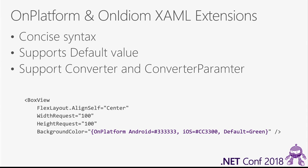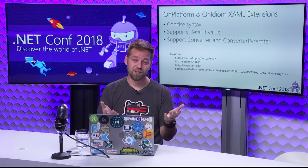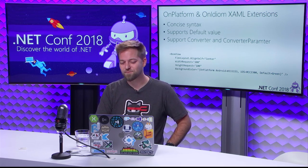This is absolutely one of my favorites, and it's gotten more reactions on GitHub than most. On platform and on idiom — Daniel Casalino, we call him Kazoo, submitted this PR where you get a much more concise OnPlatform and OnIdiom XAML extension syntax. It supports default values, converters, and converter parameters. On the background color, you call OnPlatform, pass the values for each platform, and have a fallback of green. If you've ever done the XAML OnPlatform/OnIdiom, you know it can get verbose — this is so much sweeter.